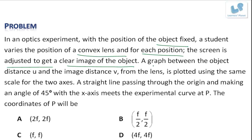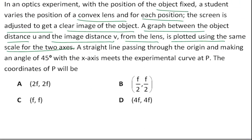A graph between the object distance u and the image distance v from the lens is plotted using the same scale for the two axes. A straight line passing through the origin and making an angle 45° with the x-axis meets the experimental curve at P. The coordinates of P will be?